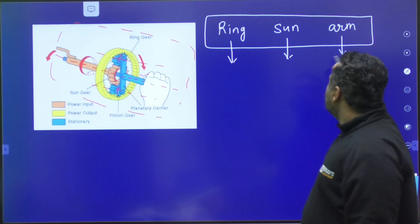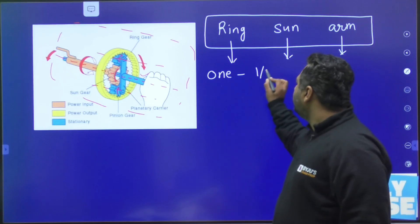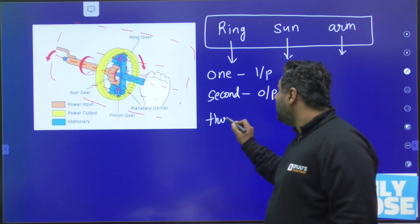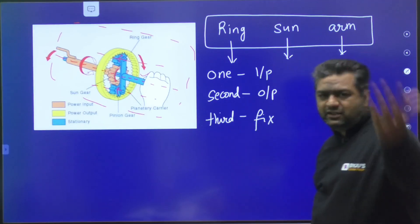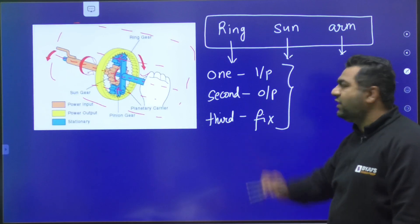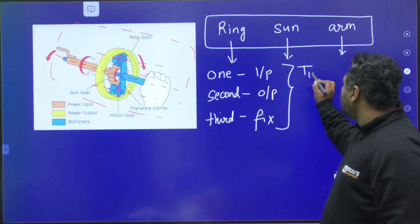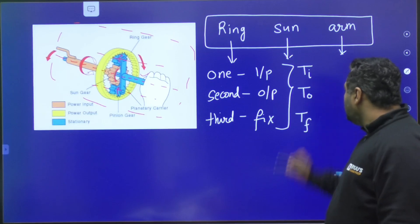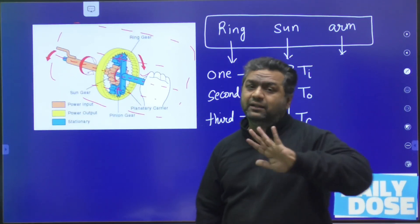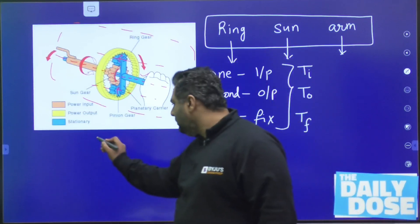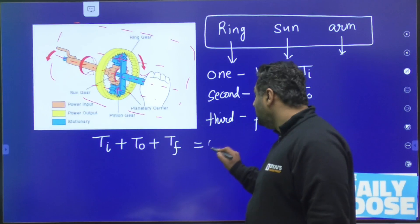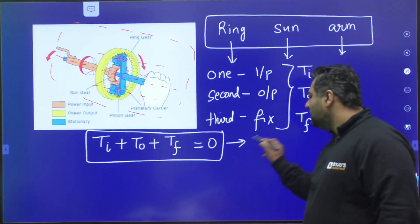Because planets are not considered. Whatever torque we want to give to the planet, that is given with the help of arm. So out of these three, you will be having one input, other second one output, and third one is going to be fixed. Generally they say ring gear is fixed or they may say sun gear is fixed. So there is one input, other output, and third one is going to be fixed. There are three torques: one will be torque of input, torque of output, torque of fix. There would be a tendency of rotation for every element. So if you want to keep one element fixed also, you need to apply the torque for that in the opposite direction. That is why T_input plus T_output plus T_fix is going to be equals to zero.